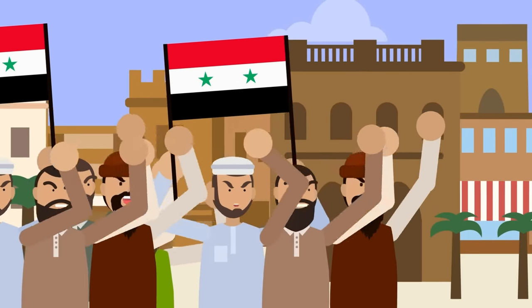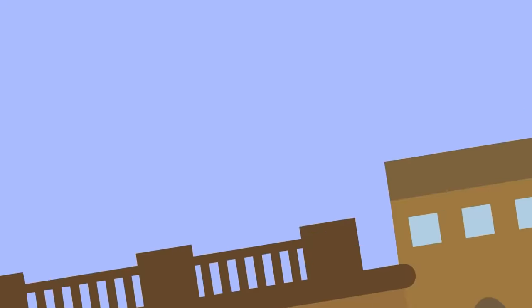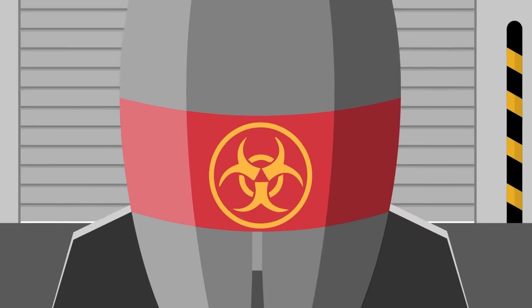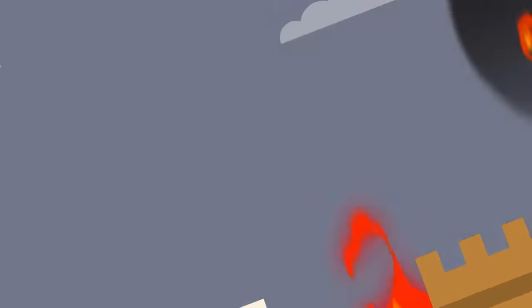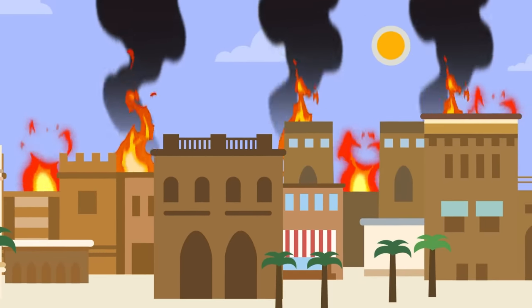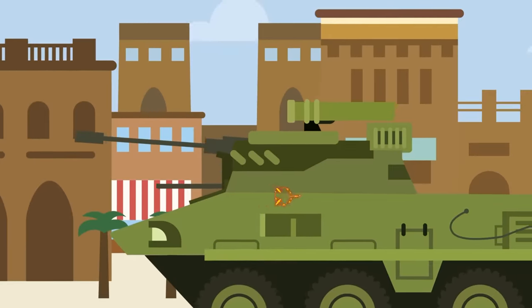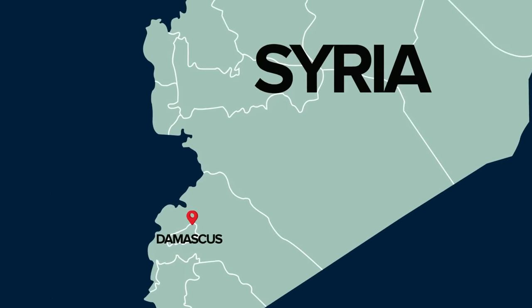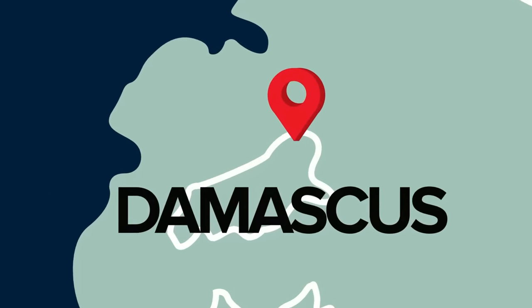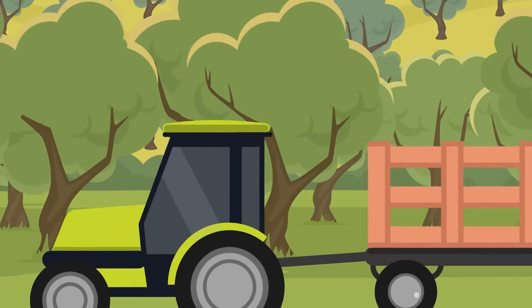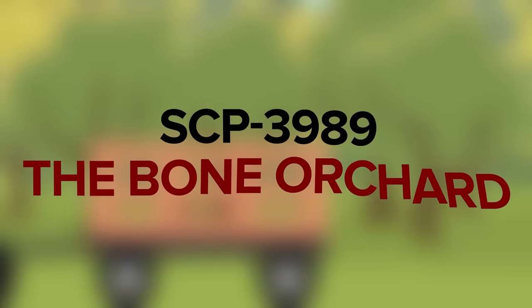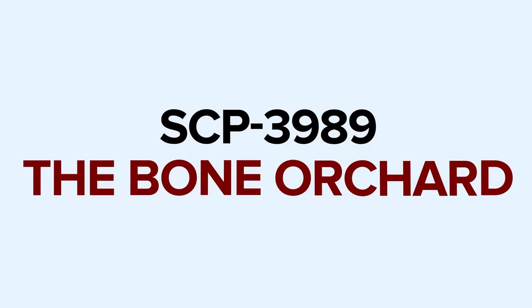The Syrian civil war was raging between multiple rebel groups and the dictator Bashar al-Assad, whose government was shelling its own people, as well as using chemical weapons and brutal campaigns of violence across the country. Little did they know, amidst all this pain and bloodshed, something even more dangerous was brewing. An anomalous phenomenon in the sunny plains north of Damascus that may pose a threat to all of humanity someday. A threat known to the SCP Foundation as SCP-3989, the Bone Orchard.